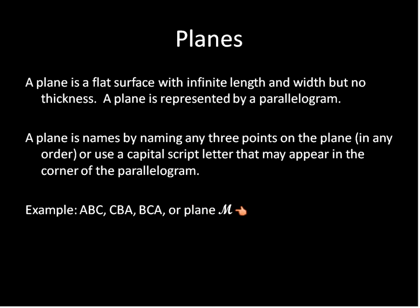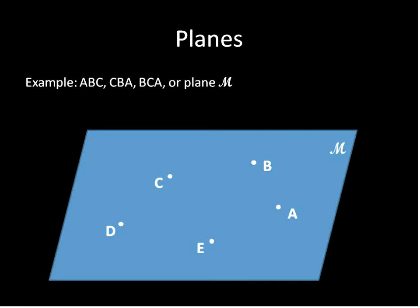So again, if we had a parallelogram with a script letter, then here I'll show you what that looks like. So here's an example of a plane. We would identify the plane using this parallelogram. And we would label it by saying it's plane M, that uppercase script letter in the upper corner. Or you could label it using any of the points that are on there.